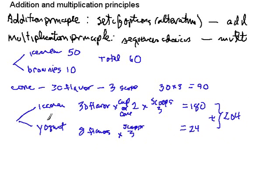We might want to write this in a way to indicate the actual structure better. We could break it up the following way: the ice cream logic was 30 flavors times cup or cone times the number of scoops possible, and then we add that to the yogurt choices.